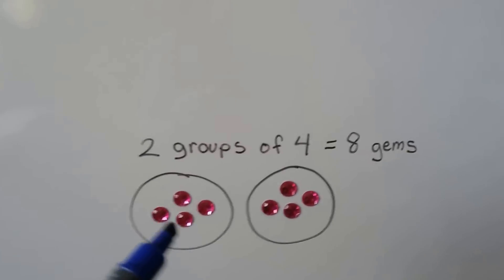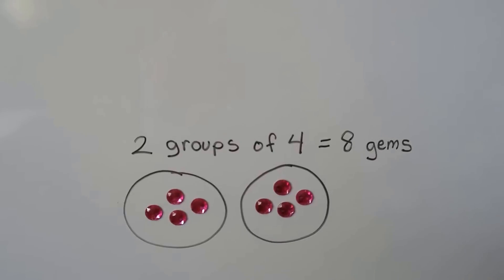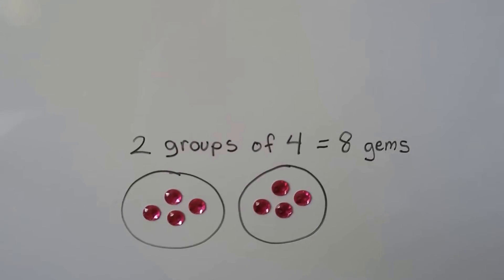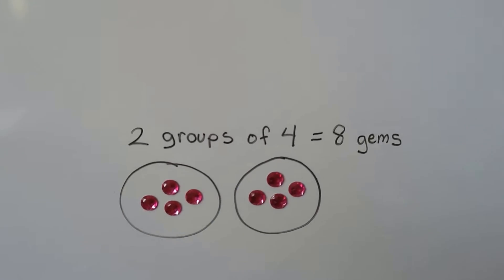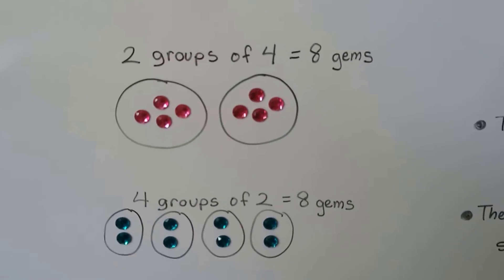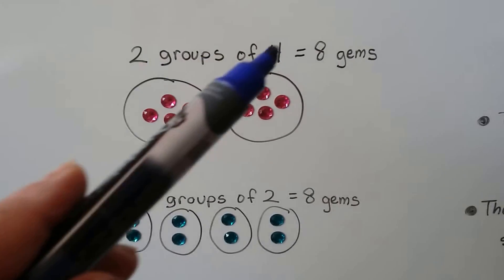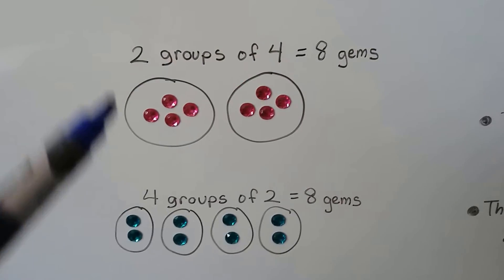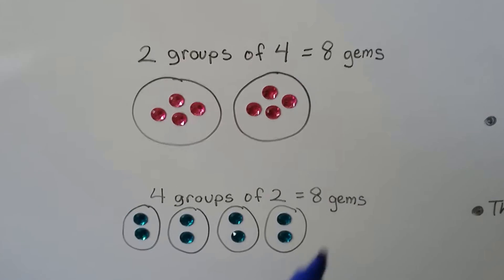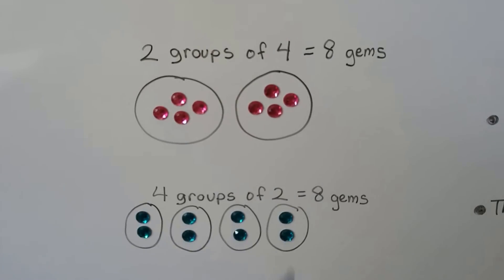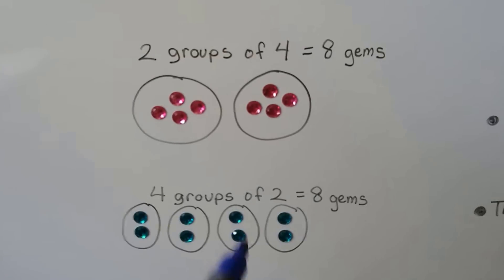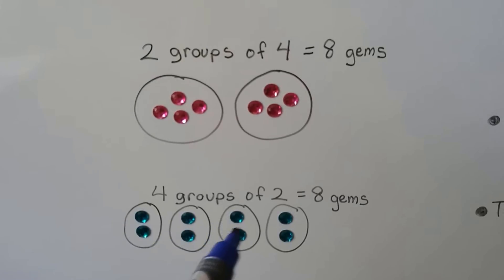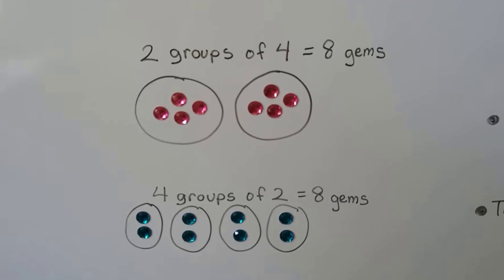Here we have two groups of four — that makes eight gems: four, five, six, seven, eight. Now here we have four groups of two. See how the numbers traded places? We had two groups of four, and now we have four groups of two, and we still have eight gems: two, four, six, eight.